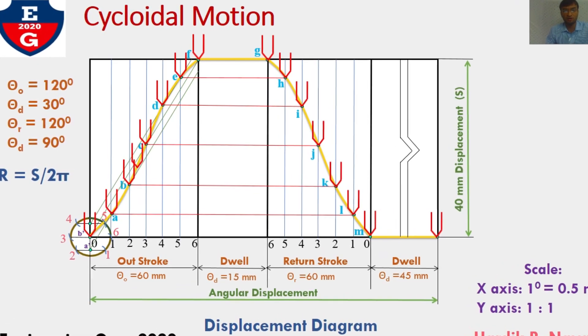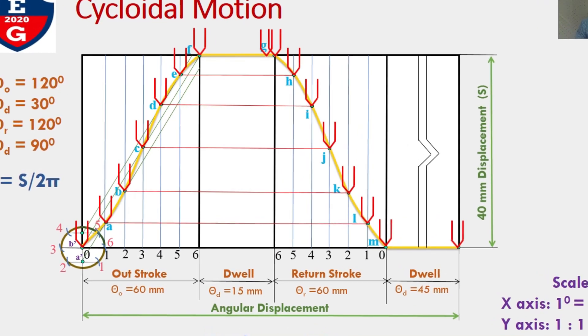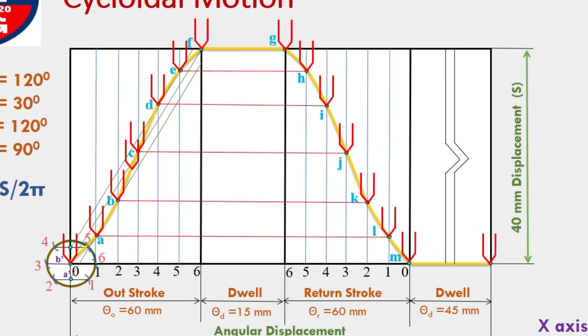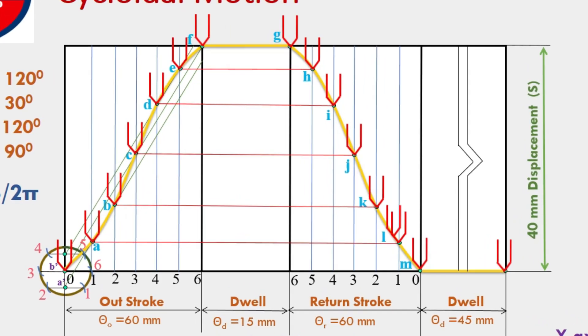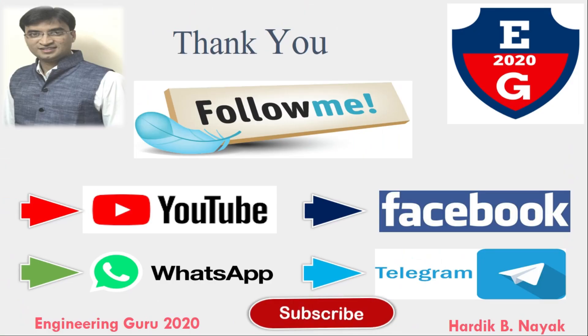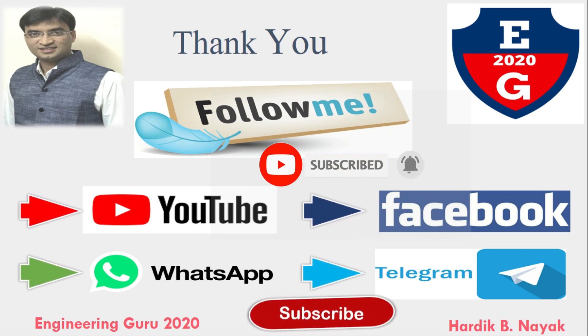Here this is procedure need to follow when Cycloidal motion is given. For example, I had assumed Cycloidal motion for outstroke and return stroke. With any Cycloidal motion, it can also be possible only in outstroke or in return stroke. So this is a video regarding displacement diagram of Cycloidal motion. At the end, if you find my video helpful, you can like, comment, share and subscribe to my YouTube channel. Thank you.